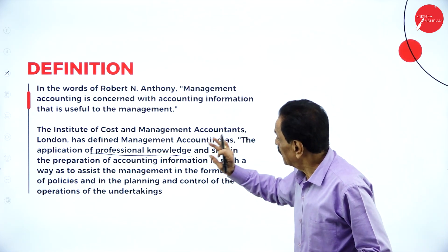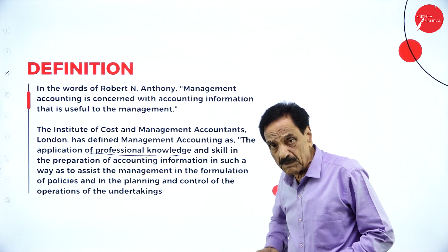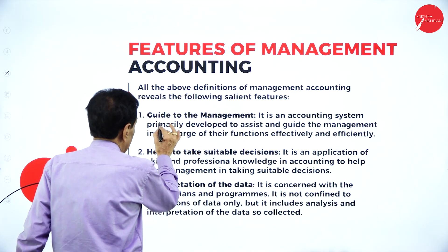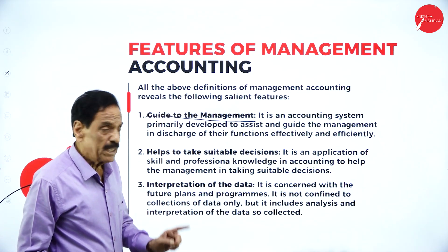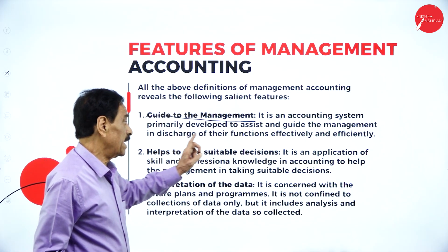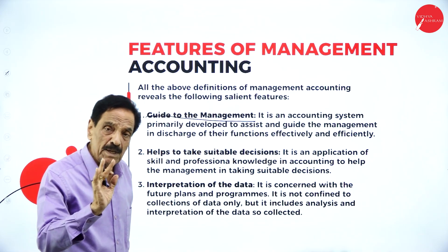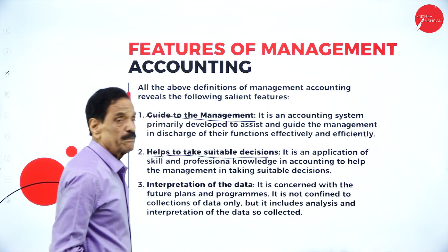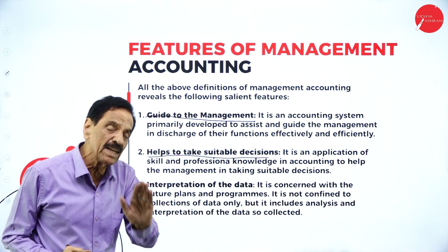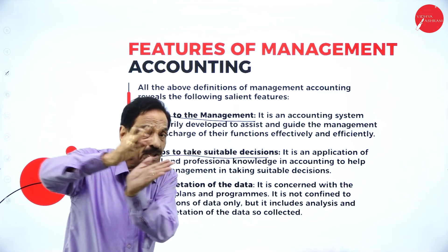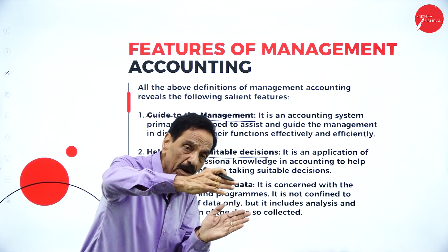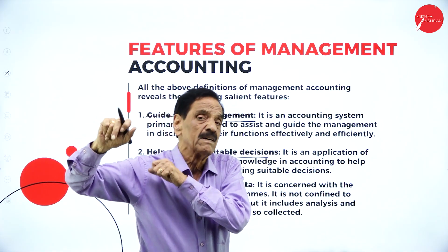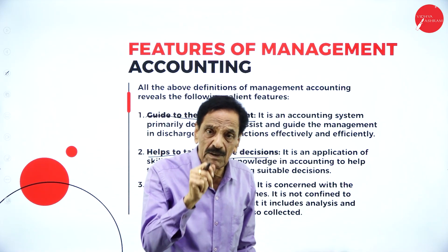Management accounting provides proper information to management. If any policy needs to be made, they depend on the plan given by management accounting — professional knowledge and skill in the preparation of accounting information to help management in forming policy. Features: the first feature is that it guides the management. Management accounting helps management make policy, take suitable decisions — whether to sell the article in a particular place or area — all these decisions are guided by management accounting.